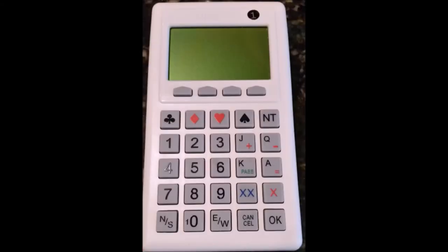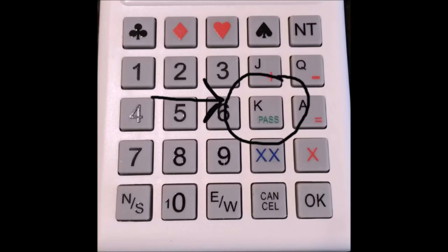There are a couple of things I need to point out about the BridgeMate keyboard. We've talked about how we put in the bid. But what happens if everybody passes? Well, there's a special key on the keyboard for just that situation. It's the K key. And you'll notice that in green it says pass. You click this key just as if you were putting in the number of the contract, and it will take you to the next round.